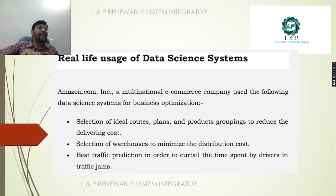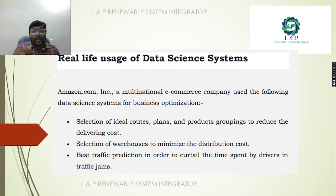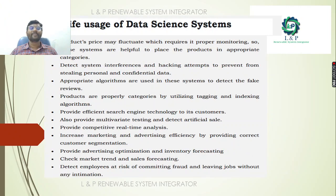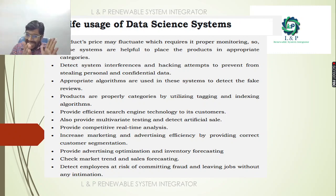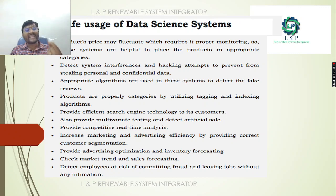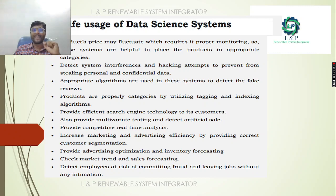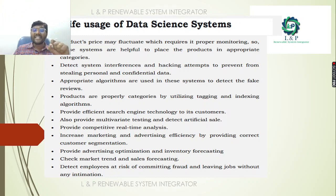Amazon uses data science for selecting ideal route plans and product grouping to reduce delivery cost, minimizing distribution cost by selecting warehouses, utilizing traffic prediction to cut driver time in traffic jams, detecting system interferences, properly categorizing products using tagging and indexing algorithms, providing competitive real-time analysis, advertising optimization, and inventory forecasting. They check market trends and sales forecasts and detect employees at risk for committing fraud.